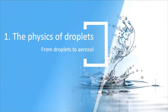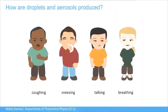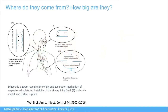Humans produce droplets from different activities: coughing, sneezing, talking, and even breathing. Even just breathing—without talking at all—produces small tiny droplets invisible to the naked eye. They are generated deep inside the lungs from the opening and collapsing of airway passages, and then exhaled out through the mouth or nose.